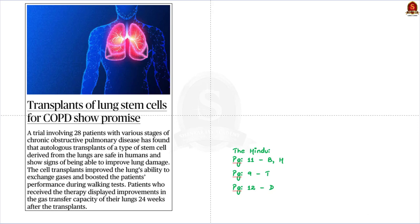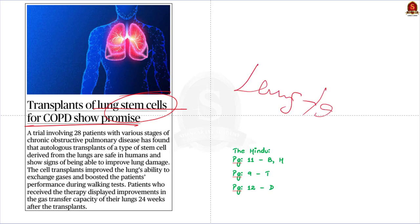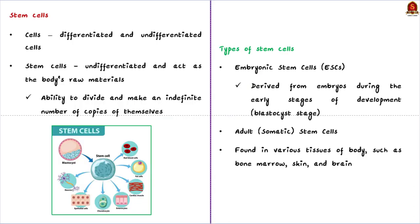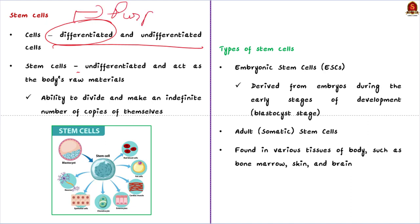Look at this article — a study found that transplantation of lungs derived from stem cells is safe for humans. Patients who received the stem cell therapy showed signs of improvement in their lung function, specifically enhanced ability to exchange gases. In this context, let's learn the basics about stem cells. Cells, the basic units of life, can be classified into two types: differentiated and undifferentiated cells. Most cells in our body are differentiated and serve a specific purpose in a particular organ — for example, red blood cells carry oxygen through the blood.